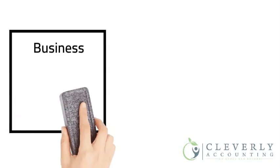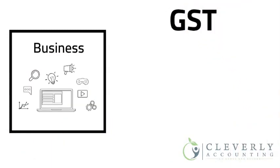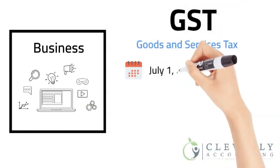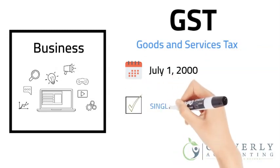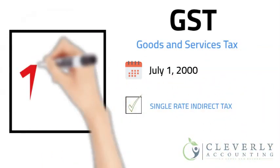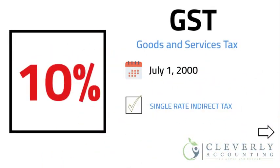The GST, or Goods and Services Tax, commenced in Australia on the 1st of July 2000 and is a broad-based single-rate indirect tax charged at the rate of 10%.